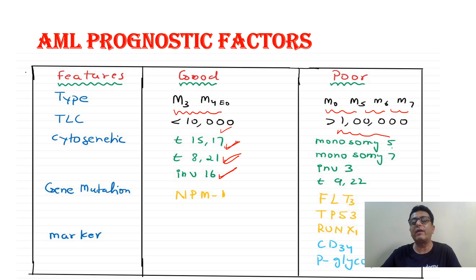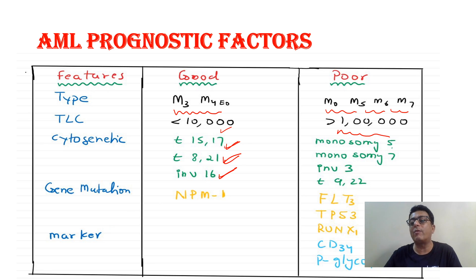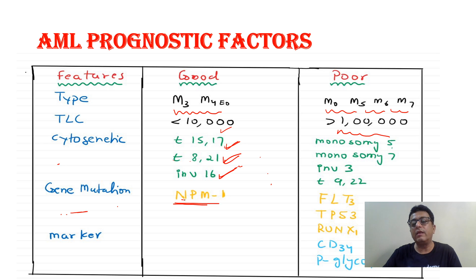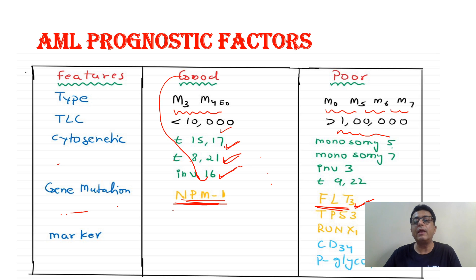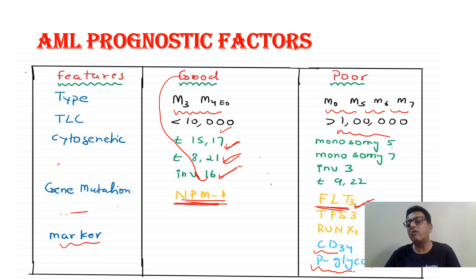Inversion 16 is a good prognostic factor. You need to remember these repeatedly. Monosomy 5, monosomy 7, inversion 3, and Philadelphia chromosome are the poor prognostic factors. NPM1 is a good prognostic factor — remember 'Good Morning NPM.' FLT3 is a poor prognostic factor. Markers CD34 and P-glycoprotein present on lymphocytes are poor prognostic factors.